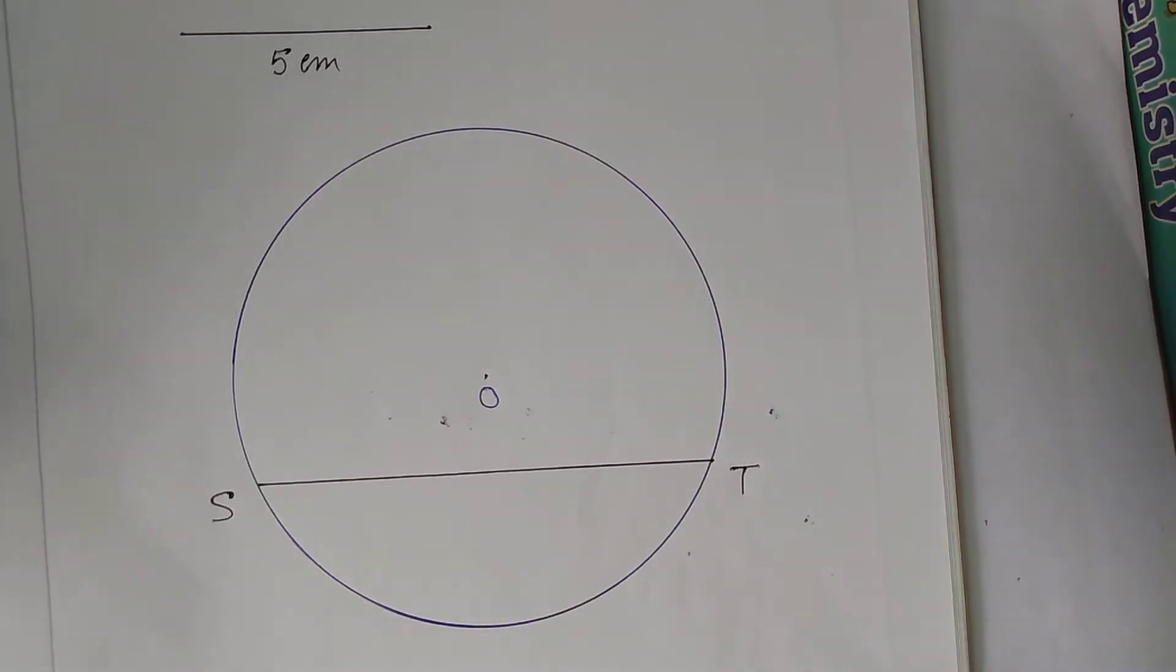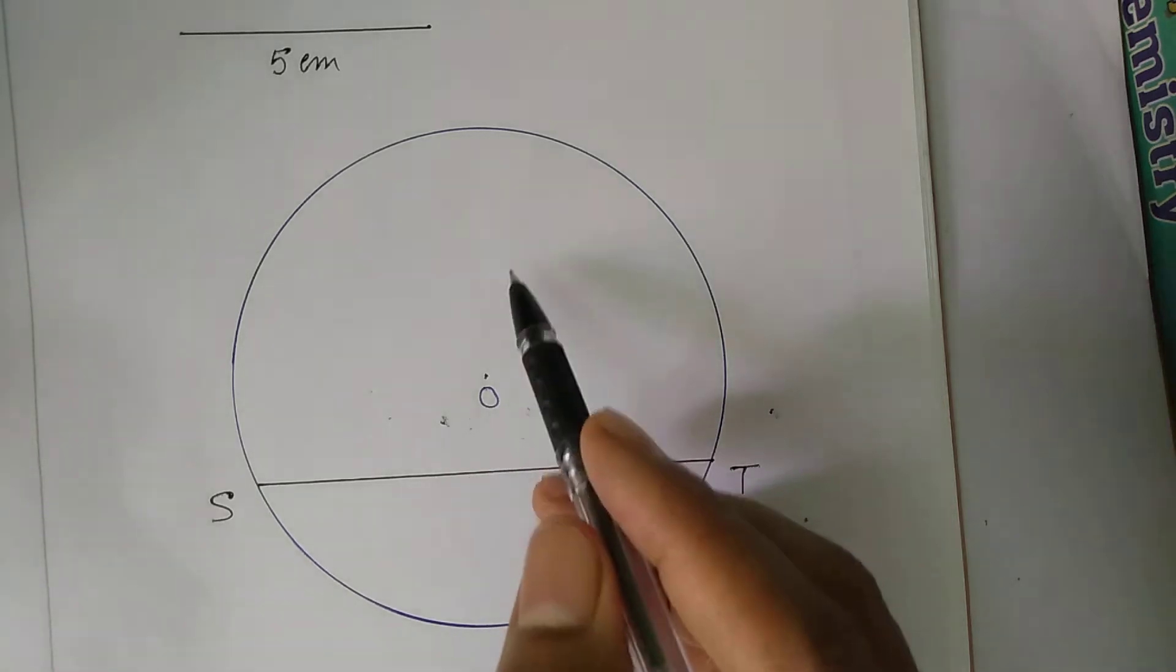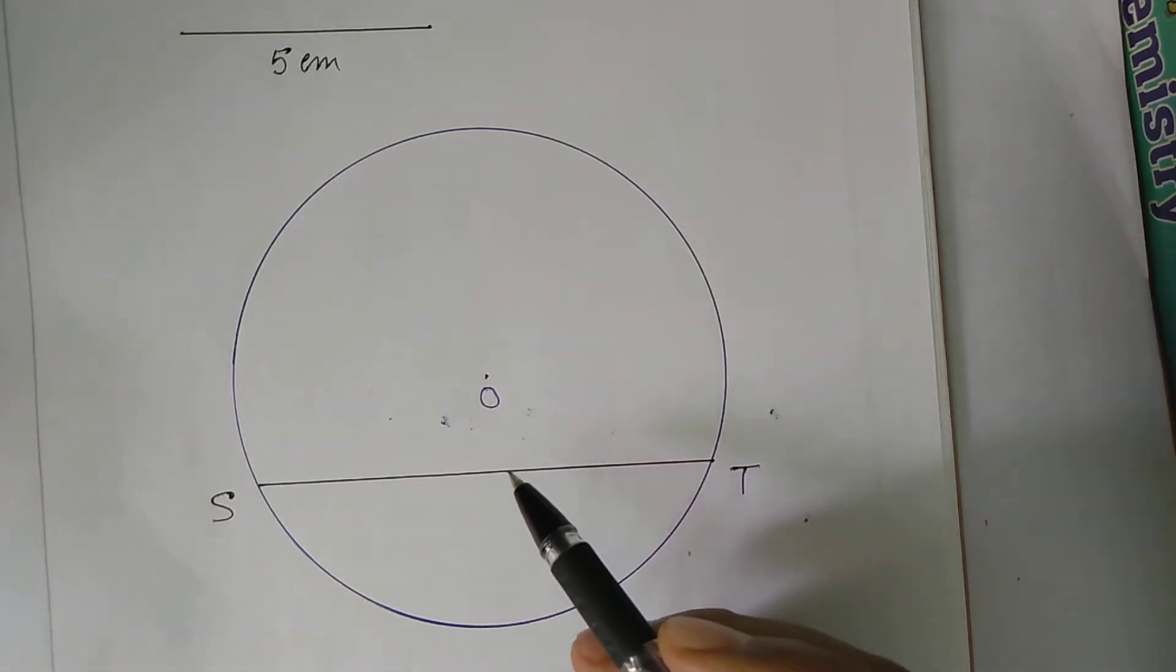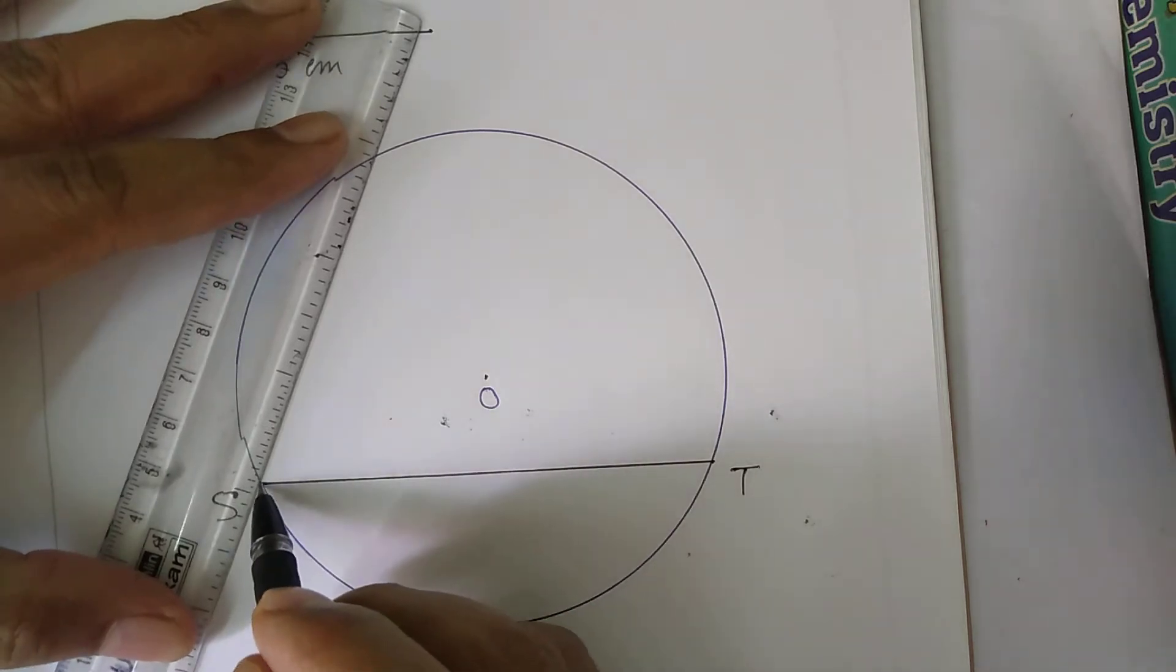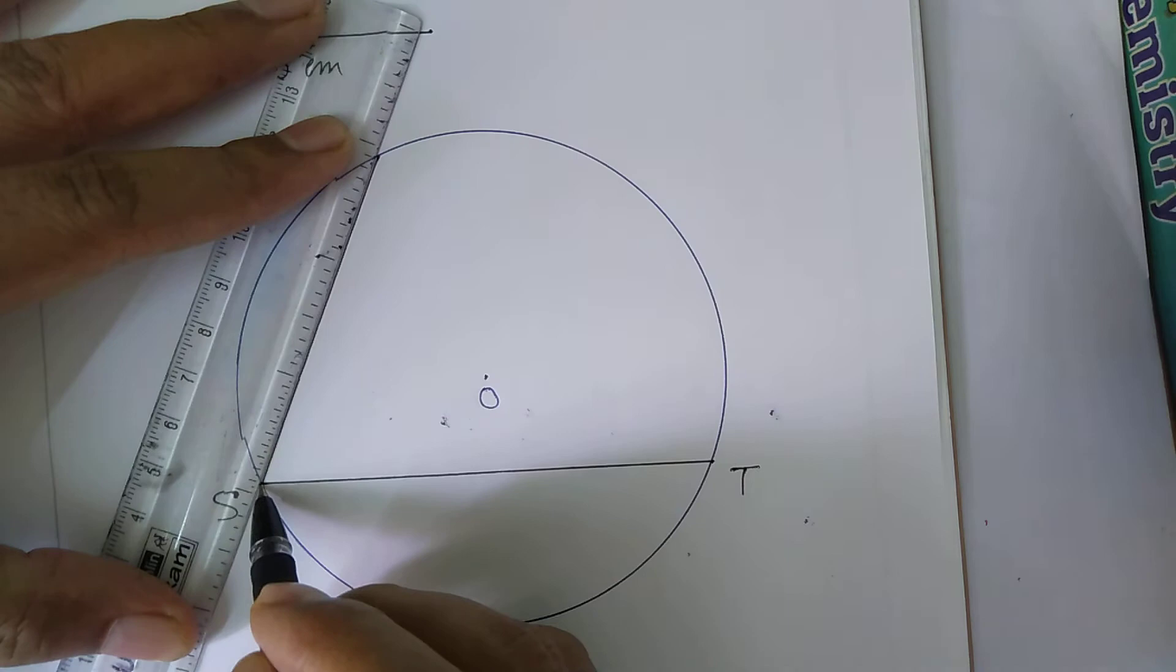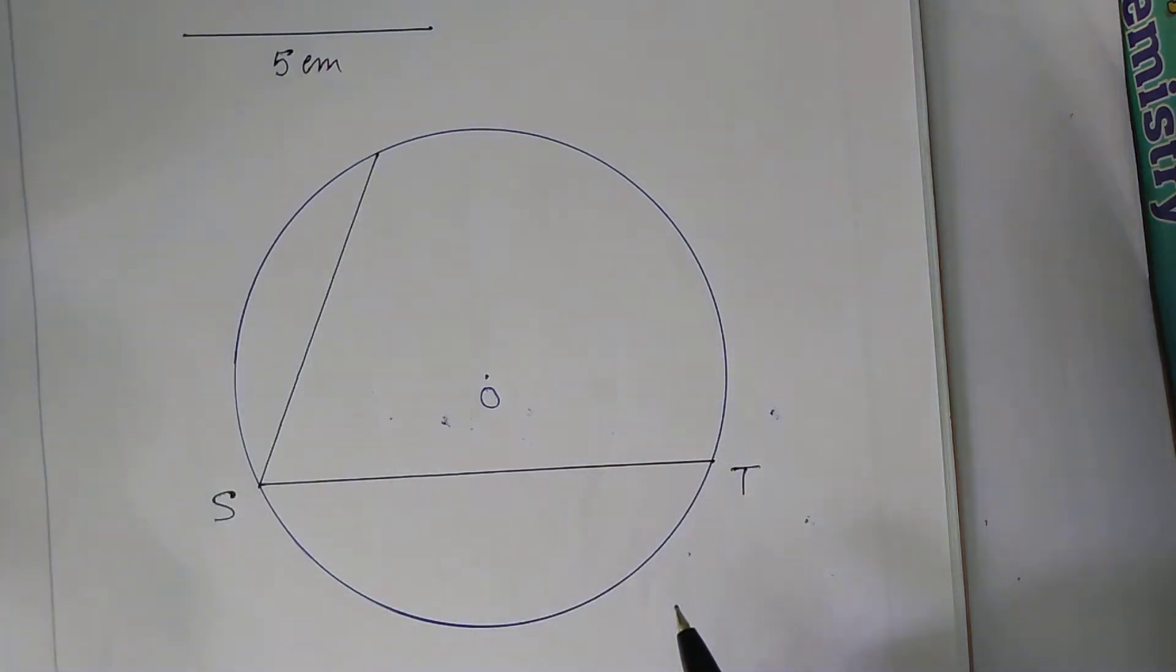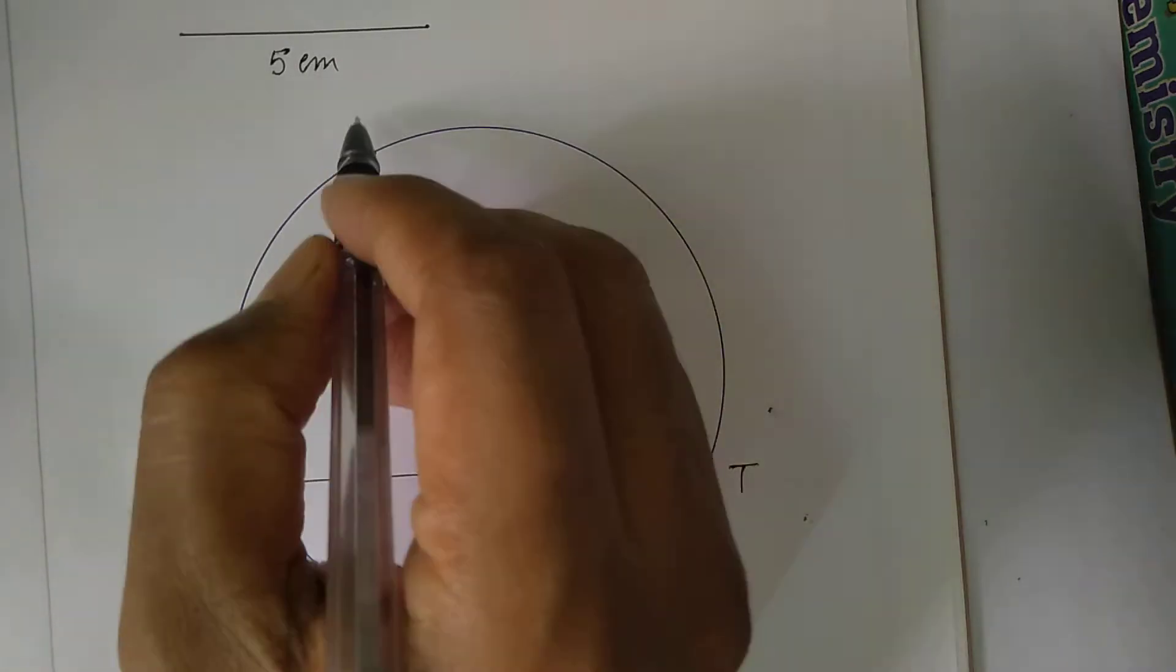We know that trapezium is a quadrilateral having one pair of parallel sides. Now draw another chord, name it SR to form STAR.